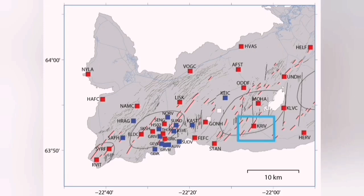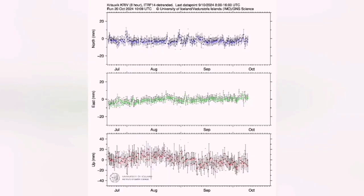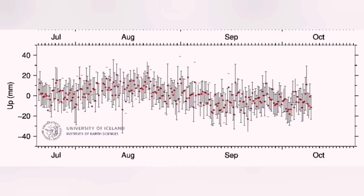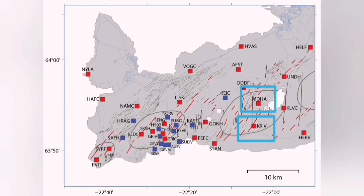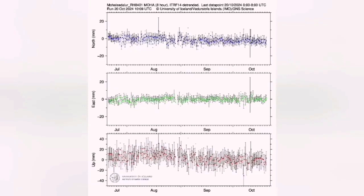We know they are not related to the magma movement because when we look at the GPS data for this area—this is Krýsuvík data—you cannot see any change in the GPS data due to the accumulation or rising of the ground due to the accumulation of the magma. The adjacent station also doesn't show anything like that.